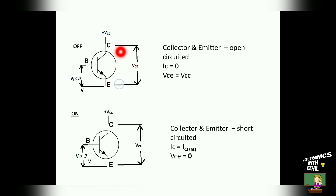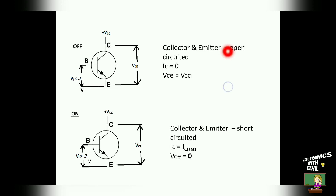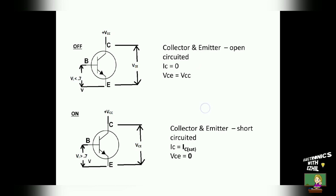Since the collector and emitter terminals are getting open circuited, the entire supply voltage will appear across the output terminal. To summarize: when a transistor is at off state, the collector and emitter terminals are open circuited, the collector current IC equals 0, and the collector-to-emitter voltage VCE equals VCC, which is the output voltage.